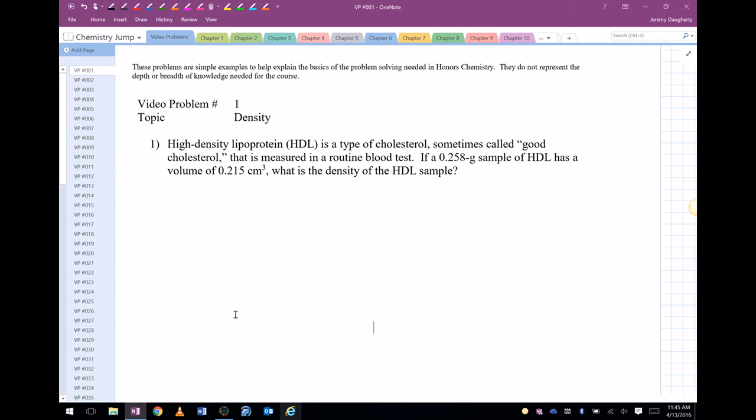High-density lipoprotein is a type of cholesterol, sometimes called good cholesterol, that is measured in a routine blood test. If a 0.258 gram sample (so there's your mass, mass equals 0.258 grams) of HDL has a volume of 0.215 cubic centimeters (so 0.215 cubic centimeters).